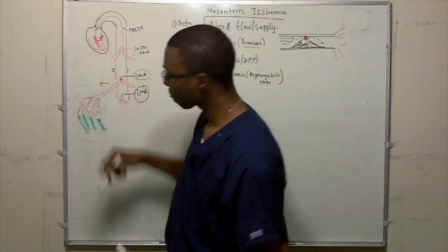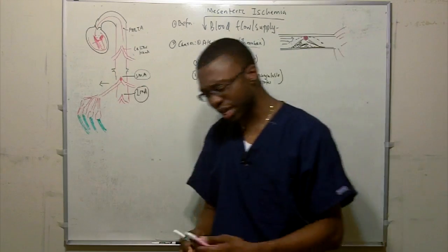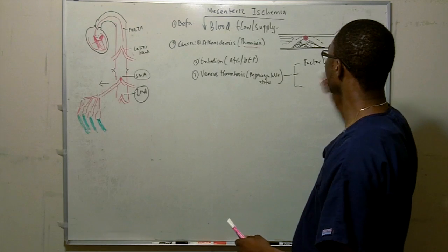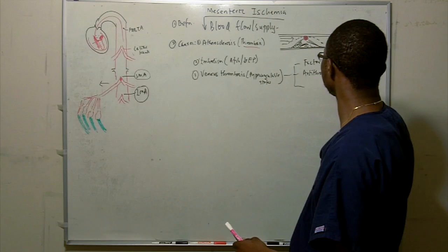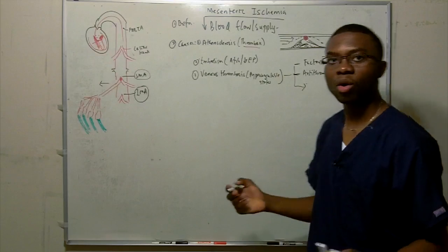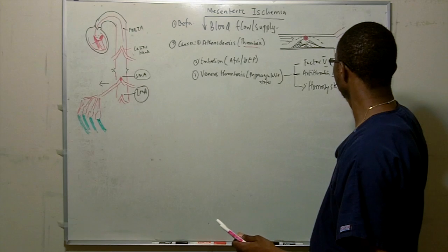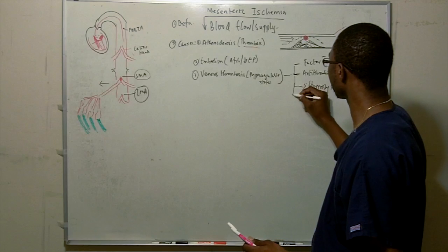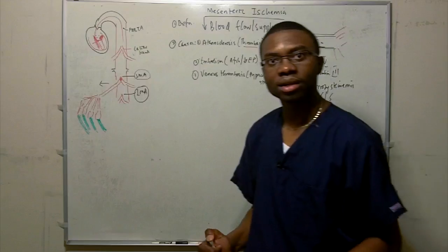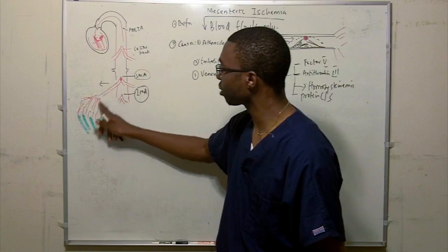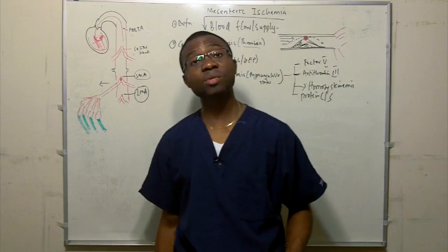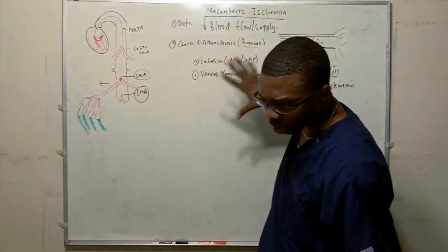What can cause venous thrombosis? Hypercoagulable states. Let's think about a couple. Factor V Leiden, it's one of them. Antithrombin III deficiency, one of them. Hyperhomocysteinemia, it's another cause. Protein C and S deficiency, these are all hypercoagulable states causing venous thrombosis. It's the same stuff. The blood gets backed up, and now the bowel starts to get ischemic. This guy's getting infarcted. So this is serious. You got to know this.